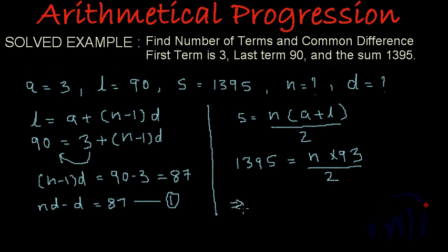So from here, n can be written as 1395 multiplied by 2, divided by 93. Both of them will be divisible by 3. 3 times 3 is 9, 3 times 1 is 3, 3 times 4 is 12, 3 times 6 is 18, and 3 times 5 is 15. And 31 divides 465 fifteen times. And 15 times 2 is 30. So we have got the value of n as 30.